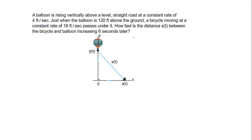A balloon is rising vertically above a level straight road at a constant rate of four feet per second. Just when the balloon is 120 feet above the ground, a bicycle moving at a constant rate of 18 feet per second passes under it. How fast is the distance S of T between the bicycle and balloon increasing six seconds later?